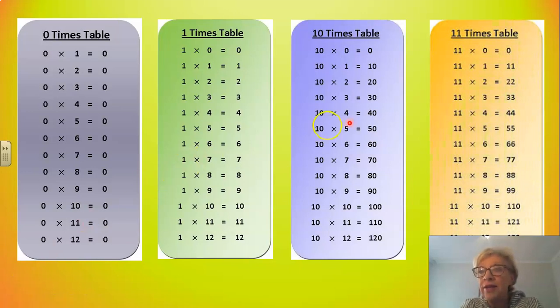Let's look at the 11 times table. There's also a pattern here. If you notice the answers, right up to 99. If you multiply any number by 11 up to 99, that number just doubles. So 11 times 1 is 11. Times 2 is 22. Times 3 is 33. Times 4 is 44.